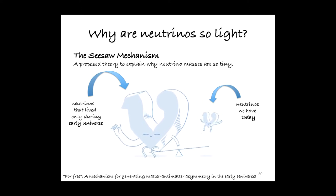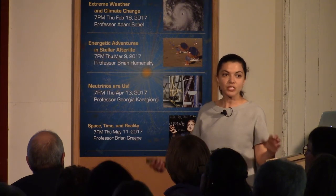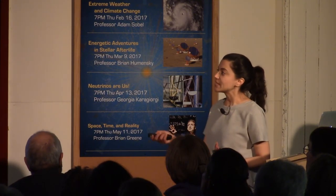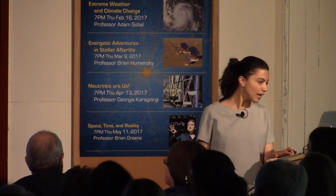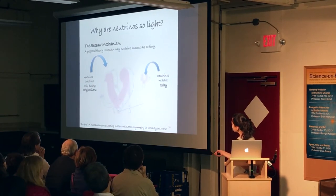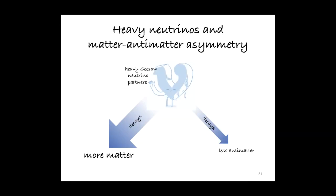These heavy neutrinos are so heavy that their mass is a quadrillion times the mass of the proton. They're so heavy that we can't even dream of producing them experimentally. But they must have been produced early on at the very beginning of our universe in the Big Bang. This actually ends up explaining not just the lightness of the neutrino masses, but also provides a mechanism for generating the matter-antimatter asymmetry in the early universe. Specifically, this heavy seesaw neutrino would have decayed asymmetrically to produce more matter than antimatter.